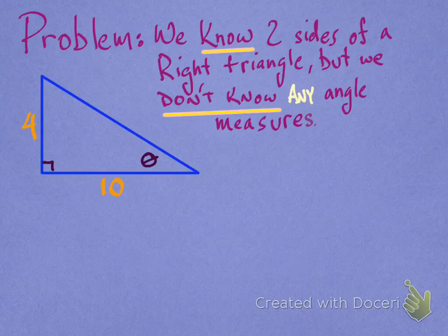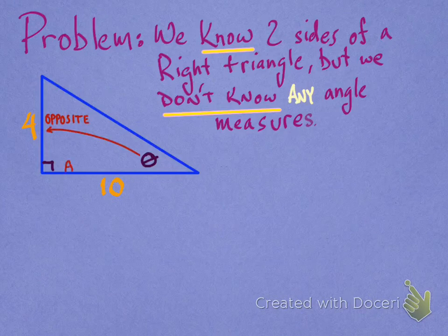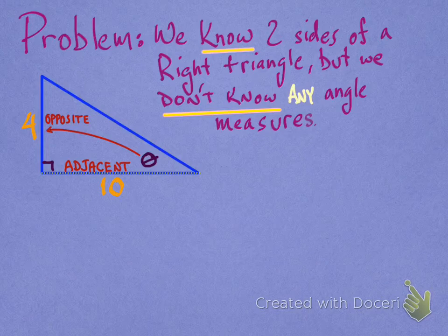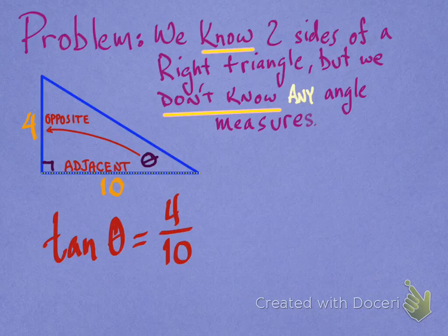All right, so I'm looking at this triangle here. I can see that the opposite side is 4 and the adjacent side is 10. So opposite and adjacent is what I use in the tangent function. All right, so the tangent equation for that triangle would be tangent theta is equal to 4 over 10.